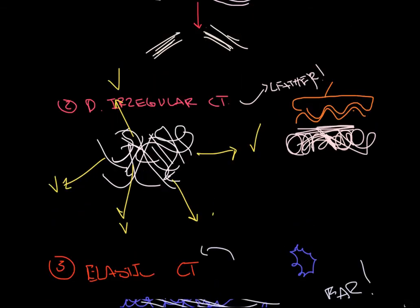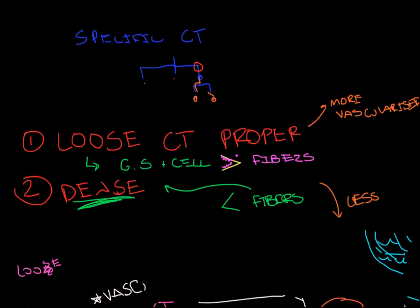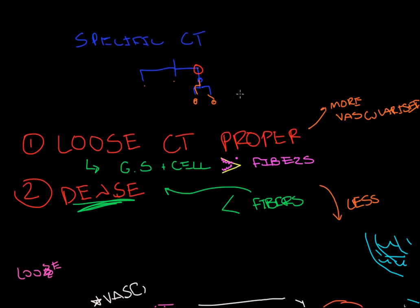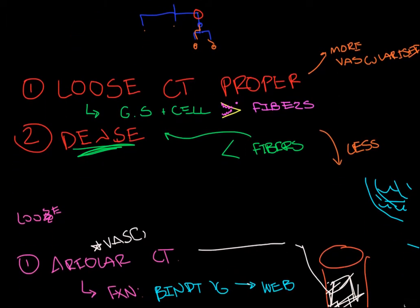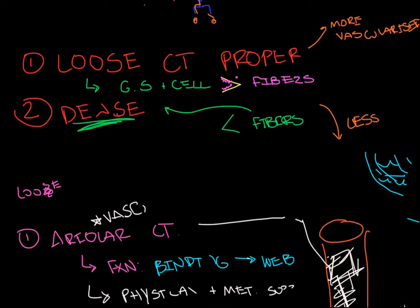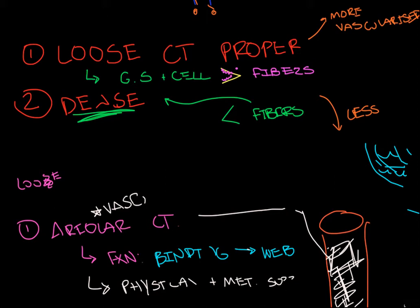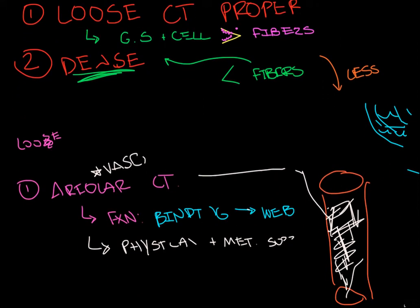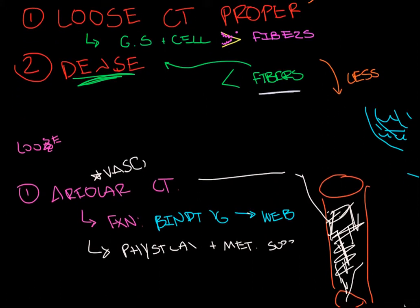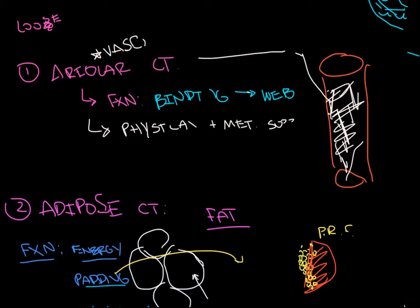And I think that's going to do it. I like to do a wrap up. So we're in CT proper, and in the proper we have loose and dense. Loose has more ground substance and cells over fibers, and there's my alligator which is super cool. Because of that, it's more vascularized, more blood supply, so it has metabolic support. Dense has really little metabolic support. It has tons more fibers over ground substances.